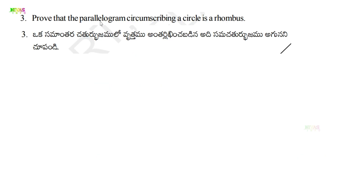Question number 3: Prove that a parallelogram circumscribing a circle is a rhombus. In a rhombus all sides are equal, whereas in a parallelogram all sides are not equal — so these two are different. We need to show that if a parallelogram has an inscribed circle, then all four sides must be equal.